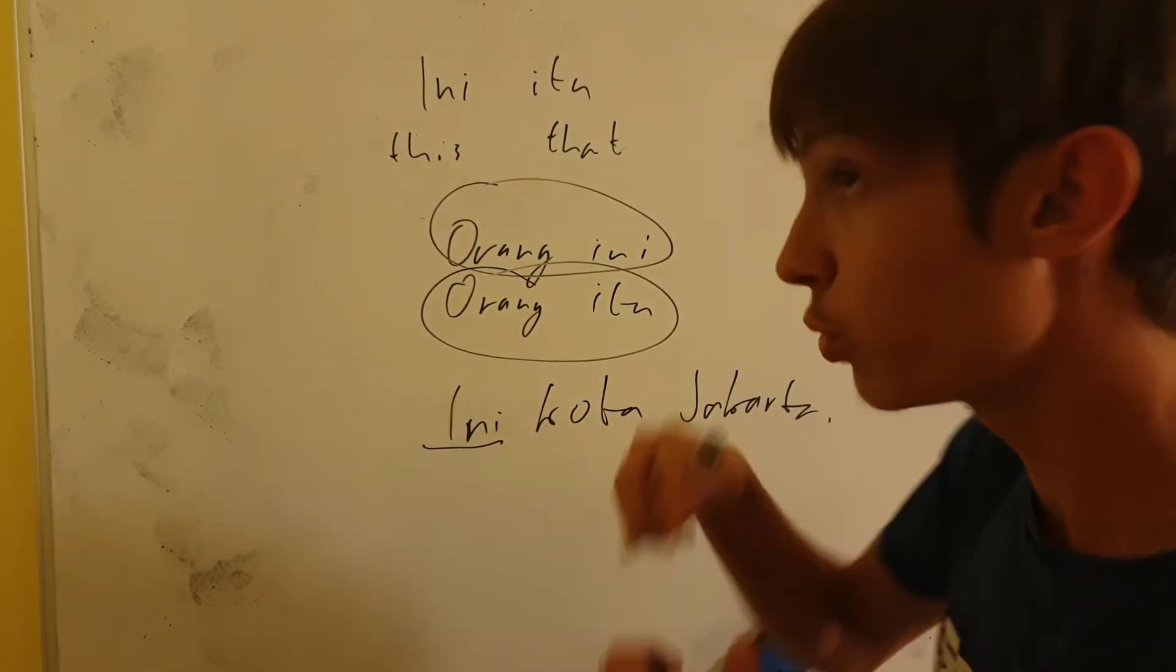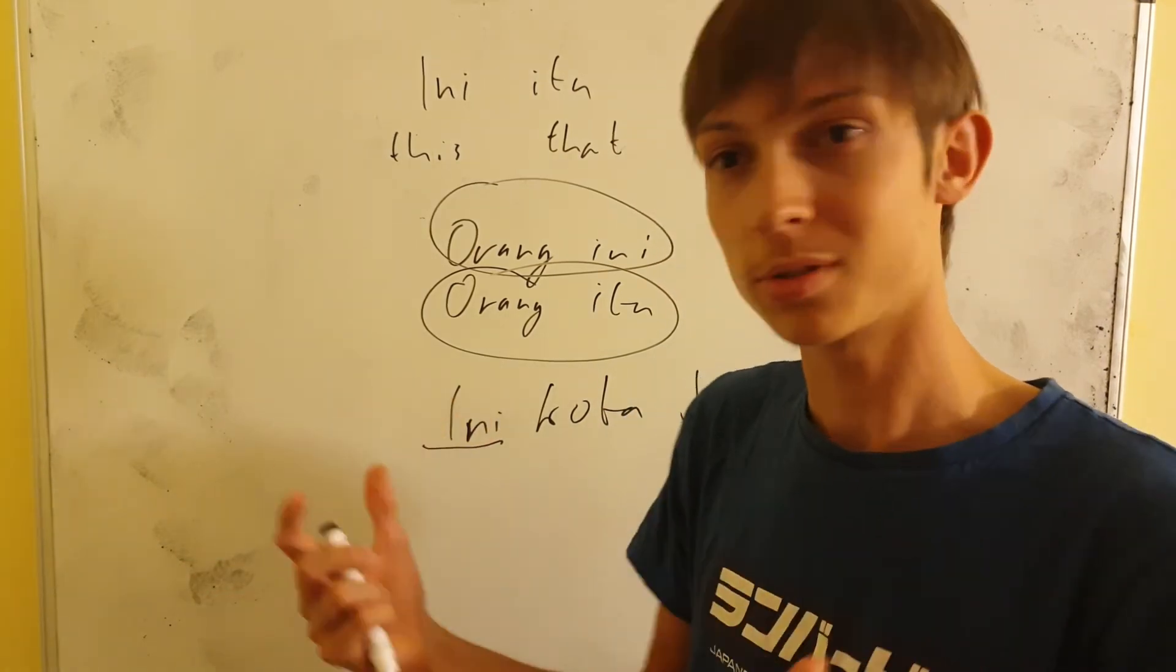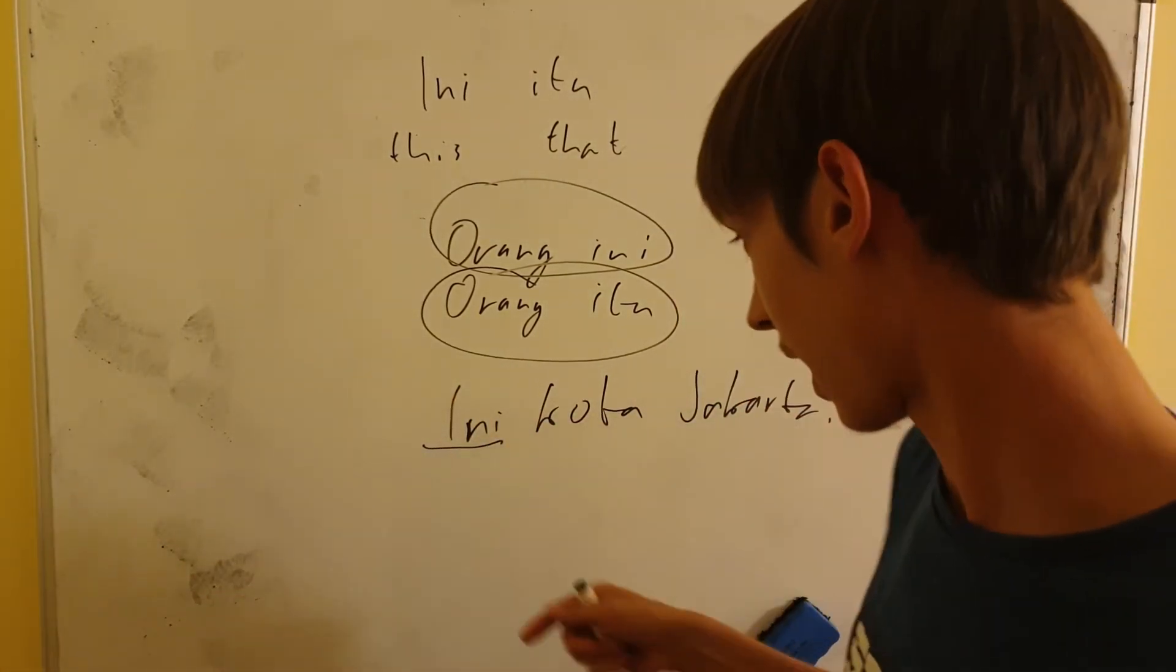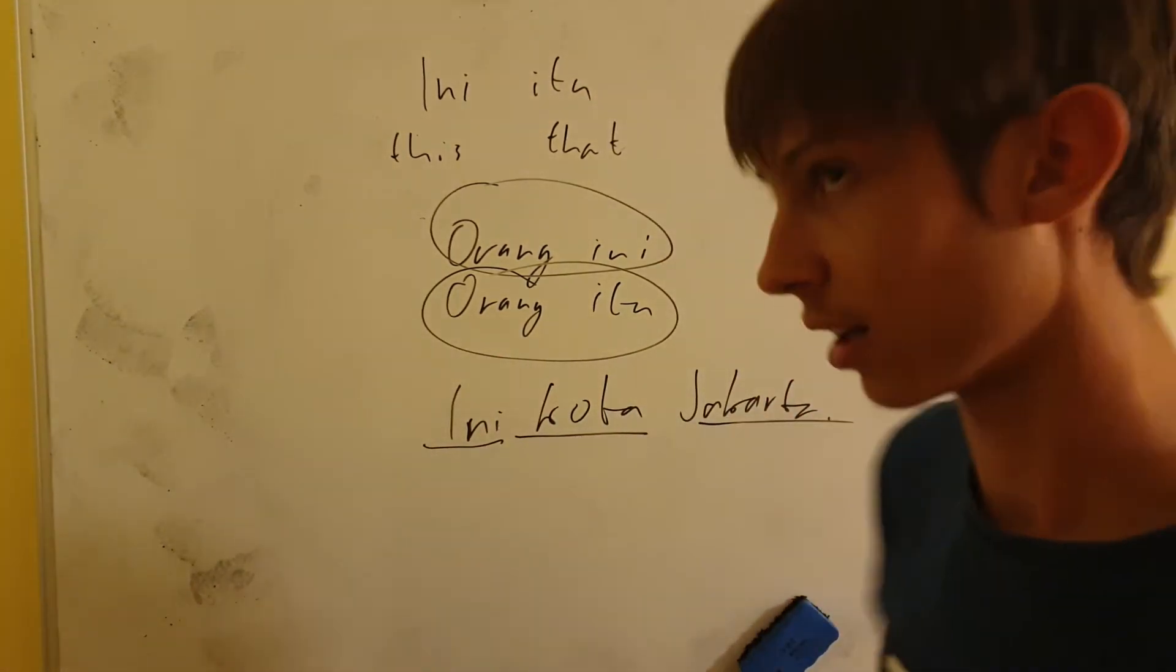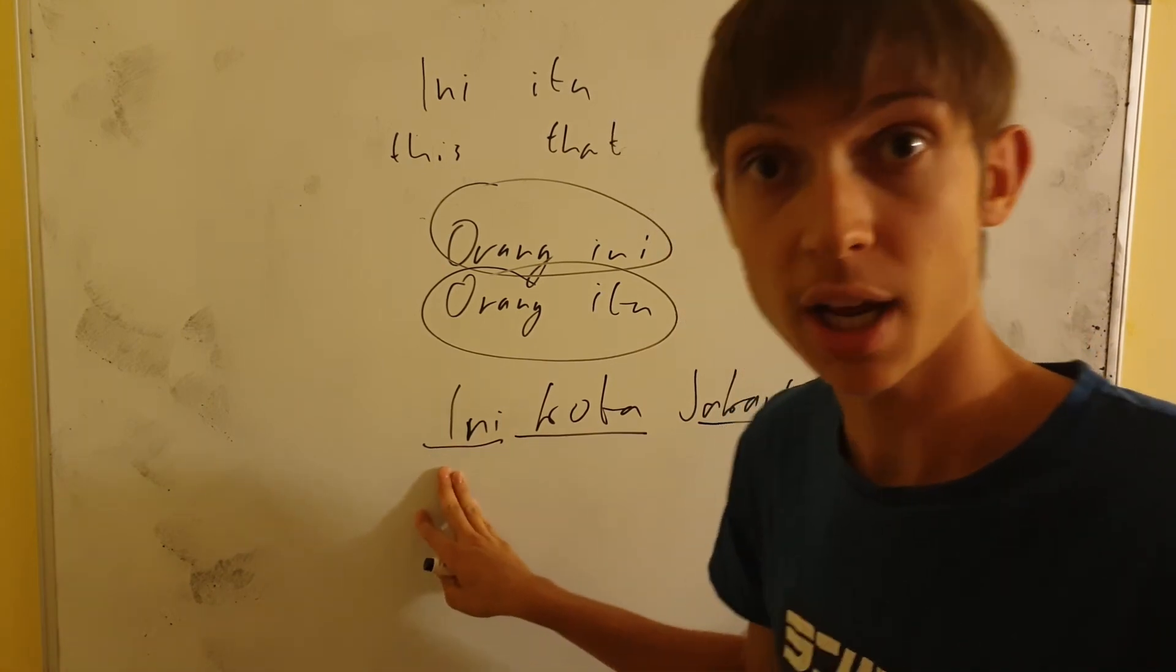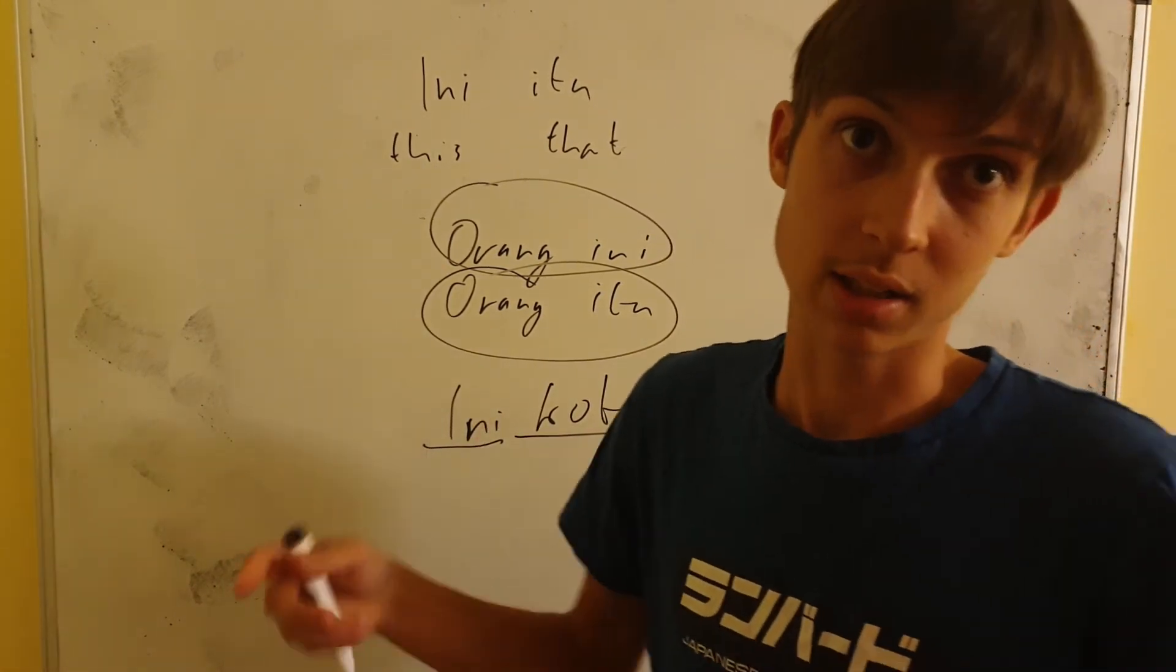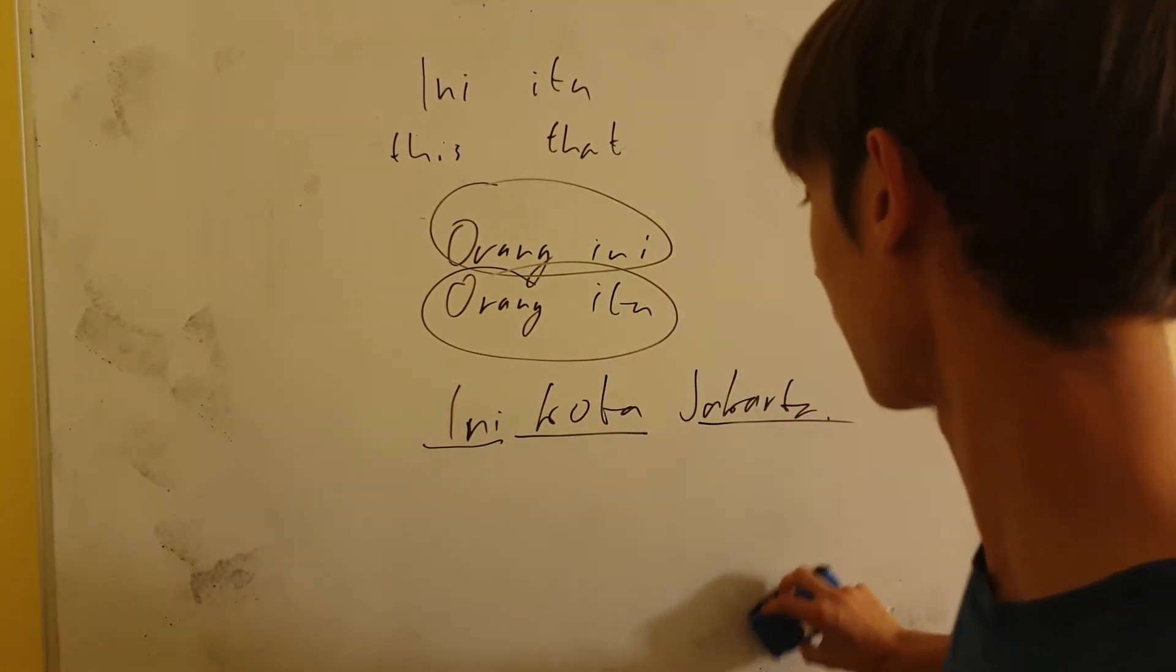So, why? Because this is as a subject and we don't need the word BE in this case at all. We can just use INI, KOTA, and JAKARTA, where INI is this, KOTA means city, and JAKARTA is Jakarta. So, we just put the information where first is the subject, then you have the object, which KOTA JAKARTA is just CITY JAKARTA. Literal translation. Nothing more complicated than that.